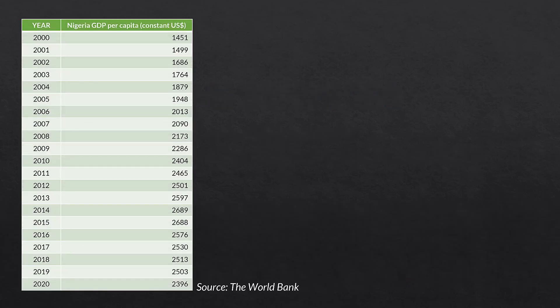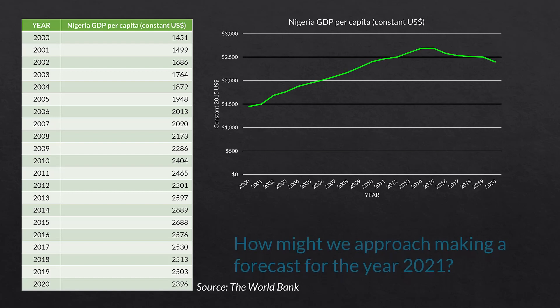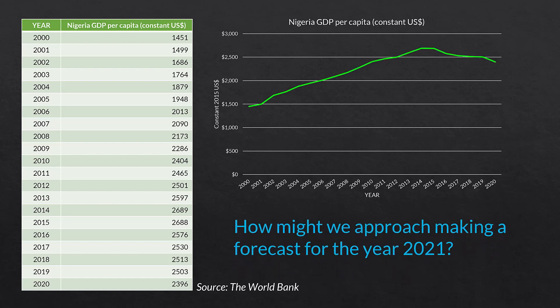These first few slides I will go through pretty quickly because they are repeats of every video in this playlist. The data we are using is the Nigeria GDP per capita from the year 2000 to the year 2020. We can see that on the table on the left, and graphically it almost doubles from the year 2000 up to 2014 and then flattens out a bit. The ultimate question is how might we approach making a forecast for the year 2021?